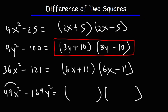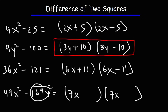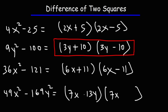For the last one: 49x squared minus 169y squared. The square root of 49 is 7, and the square root of x squared is x, so we have 7x. The square root of 169 is 13, and the square root of y squared is y. So we're going to have 7x plus 13y times 7x minus 13y.